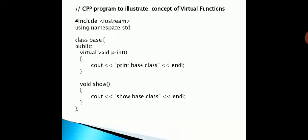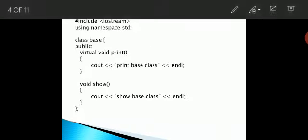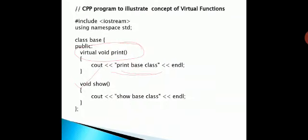Here is an example of virtual functions. A class 'Base' is defined with two public functions: the 'print' function is declared as virtual and prints 'print base class', and the 'show' function prints 'show base class'.